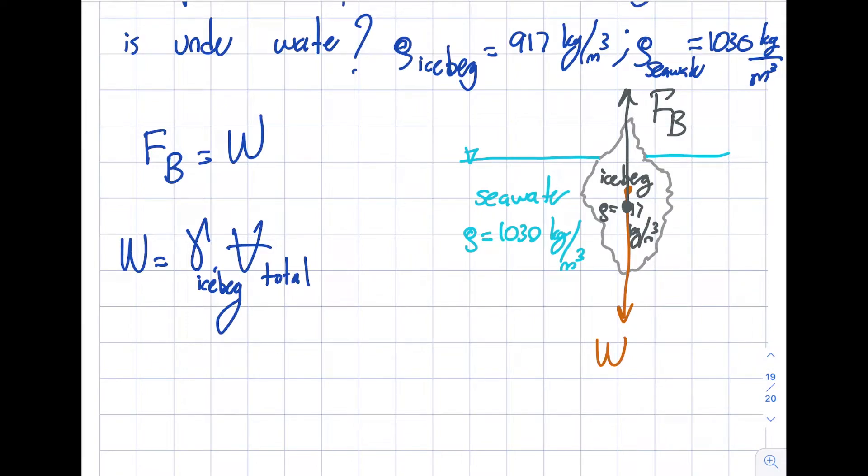And acts up, which is opposite to gravity. So we know that part. Now let's write it. F_B will be the specific weight of the seawater—this is important, it's not the iceberg—times the volume under water.